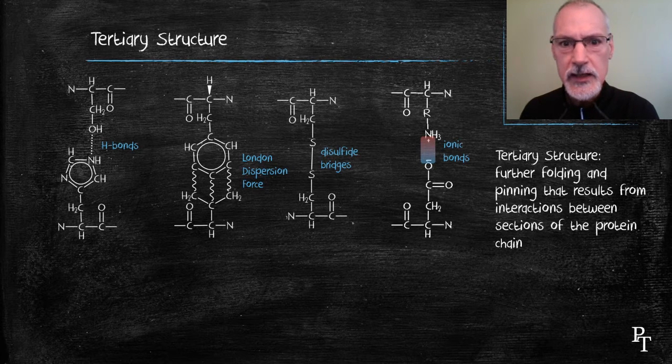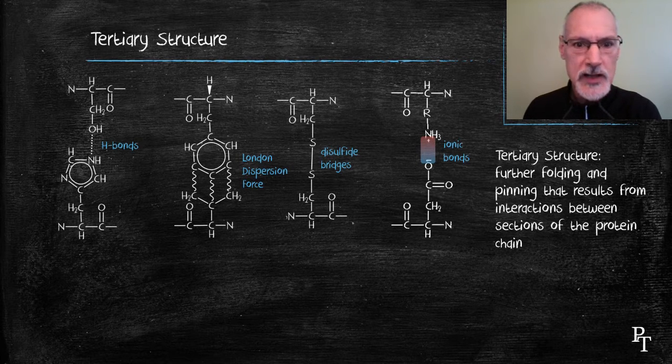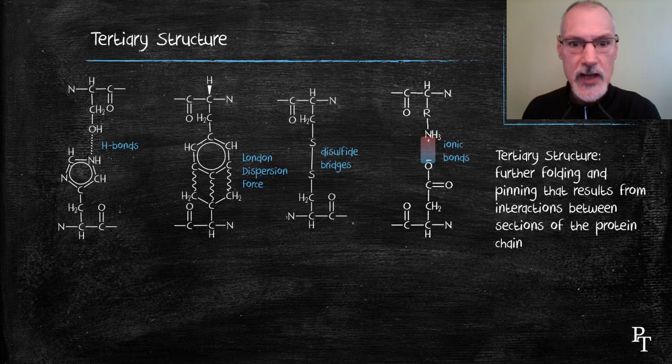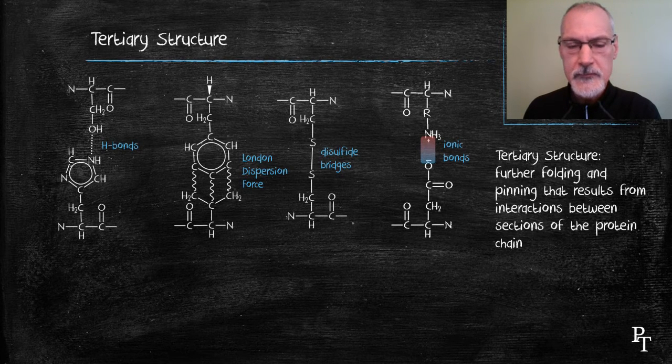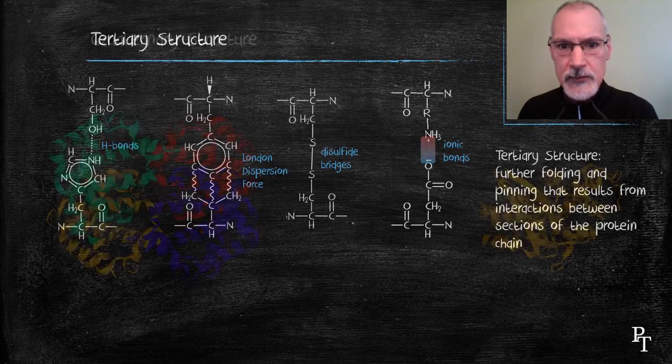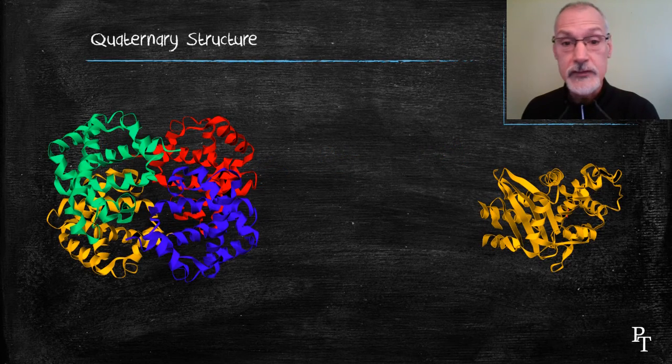So these provide four further bonding types that can take place beyond the hydrogen bonding that can take place in the backbone. Our final level of organization, some proteins have and some don't.